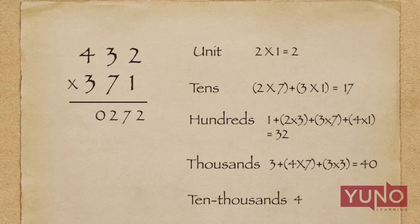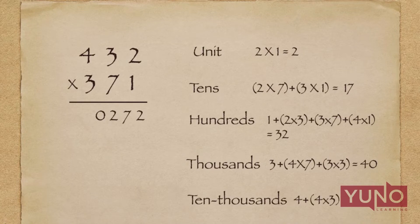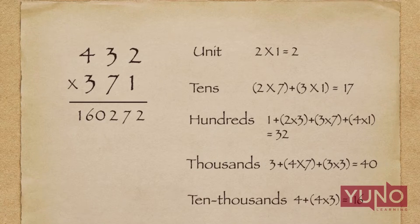This new carry will be used in the last step, where I will perform the multiplication of the hundreds-place digits. 4 will be added to the multiplication of 4 × 3, so the total will be 16. I will write 16 in the answer, and our final answer will be 160,272.